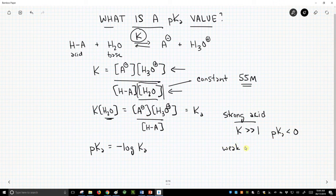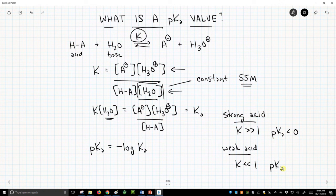For weak acids, k tends to be pretty small. The equilibrium favors the left-hand side of the equation, the starting material. So the k is very small. And if you take a small number less than 1, and when I say less than 1, it's not negative, it's some fractional value of 1, we get a pKa that is greater than zero.